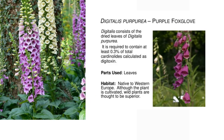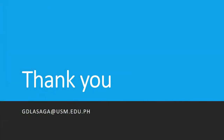An important source of glycosides is digitalis, which consists of the dried leaves of Digitalis purpurea, or the purple foxglove. Digitalis is used to treat congestive heart failure and rhythm problems such as atrial arrhythmias.